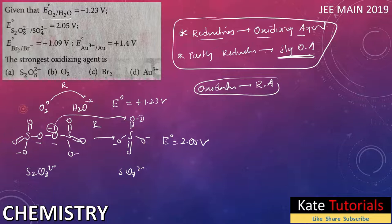For bromine: Br2 (zero oxidation state) converting to Br⁻ (minus one) — that is reduction, and its reduction potential is +1.09 volts. For gold: Au³⁺ converting to Au⁰ — reduction potential is +1.4 volts.